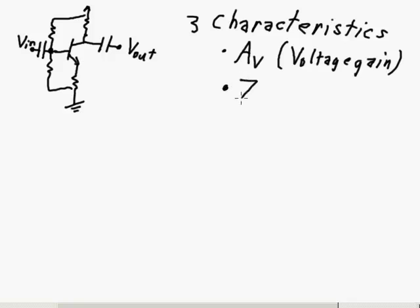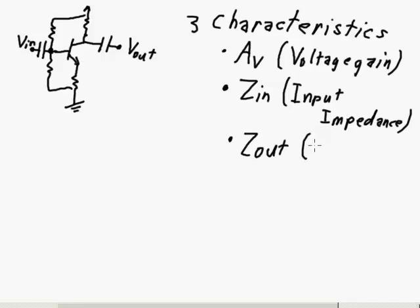They will also have some amount of Zin, which is input impedance. And the third thing is they'll have some amount of Zout or output impedance. And both of these last two things, the input impedance and the output impedance, are going to potentially have a pretty significant effect on the way the amplifier behaves compared to if you just consider the voltage gain.